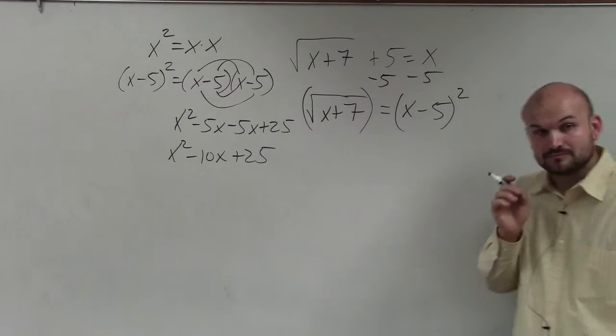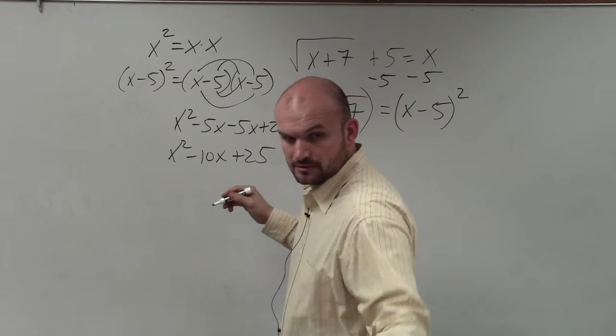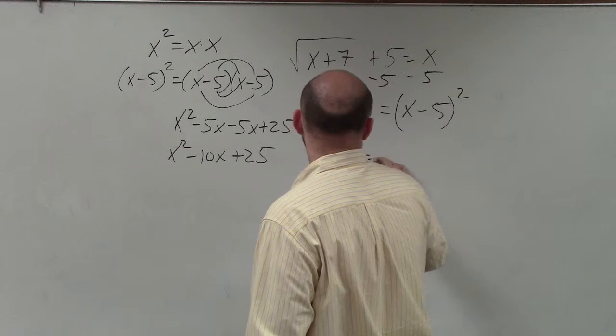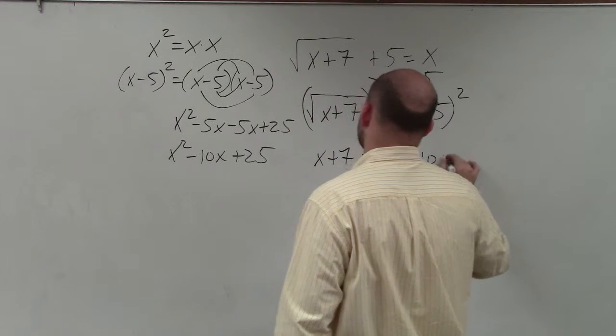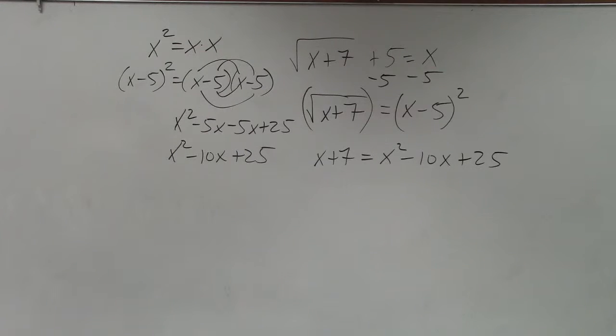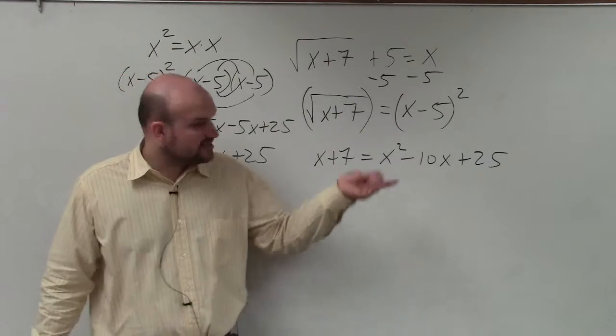So now you have x plus 7 equals x squared minus 10x plus 25. But the thing is, this isn't anything that's ever really new. It's just remembering what stuff we already covered. So the next thing guys, is we have a problem now where we have variables on both sides, and we also see that we have a quadratic.